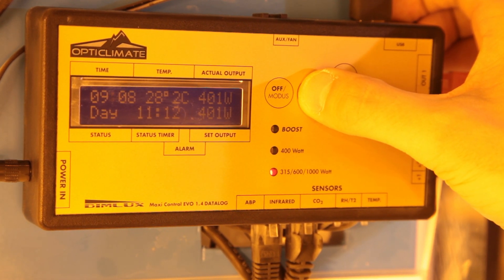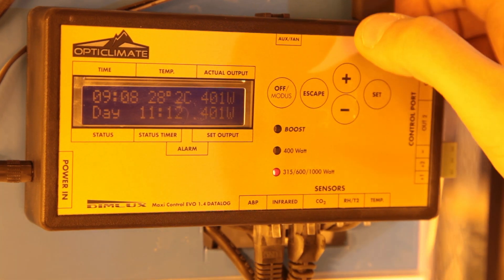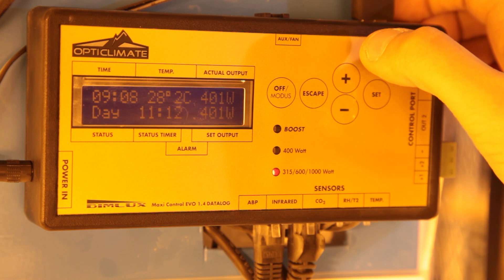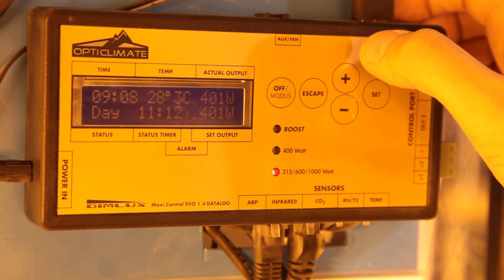Pressing the escape key allows you to flick through your different information displays. Lighting is the default, it tells you the time, the current room temperature and the time remaining for the lights on period if you're using the timer functionality.